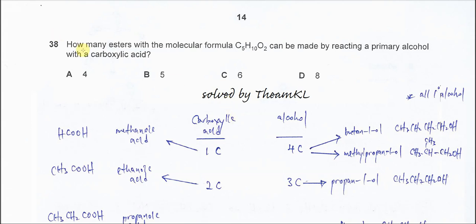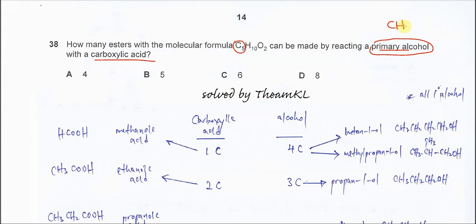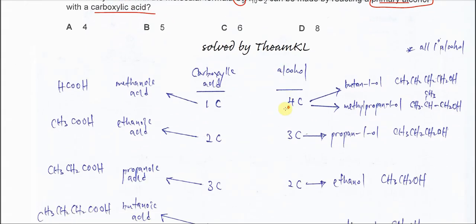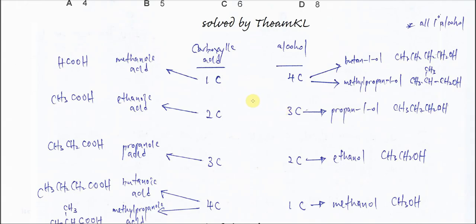Question 38. How many esters with the molecular formula C5H10O2 can be made by reacting a primary alcohol with a carboxylic acid? The ester formed must have five carbons, and the alcohol must be a primary alcohol, which has the group CH2OH. We need all primary alcohols reacting with carboxylic acids, so let's look at the possible combinations.